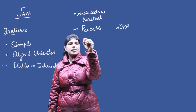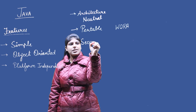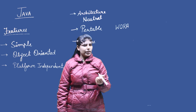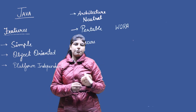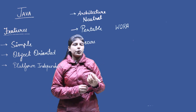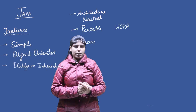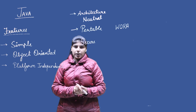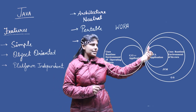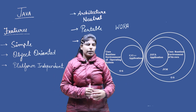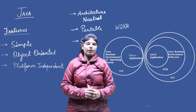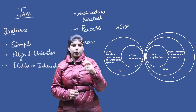The next feature is secure. Java is a secure programming language for two main reasons. First, Java does not have pointers, so we do not have direct access to memory locations. Second, the Java code runs inside the virtual machine instead of directly running on the machine. Both of these make Java a secure programming language.